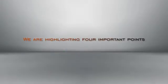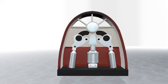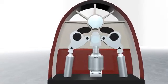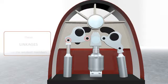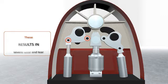We are highlighting four important points in this regard. In the case of Swing Guide Type Machine, bending force is transferred from cylinders to the rolls using linkages. These linkages are weakest members in the frame. This results in severe wear and tear during the bending operations.